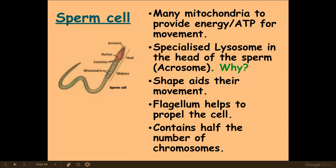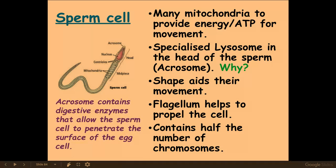Sperm cells have many mitochondria to undergo aerobic respiration and make ATP. This ATP is needed to aid the contractile filaments in the tail to contract, enabling movement. Sperm cells also have an acrosome containing specialized lysosomes, which break down the protective layer on the outside of the egg cell in order to penetrate and fertilize it.